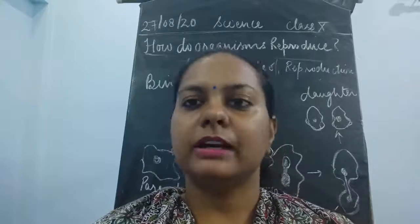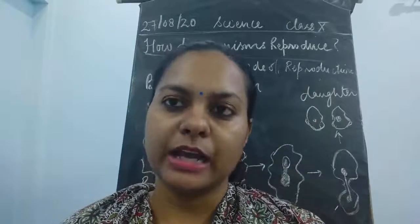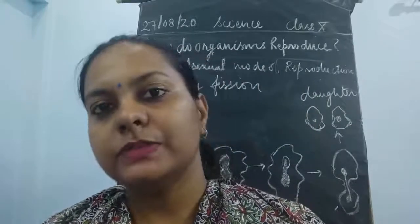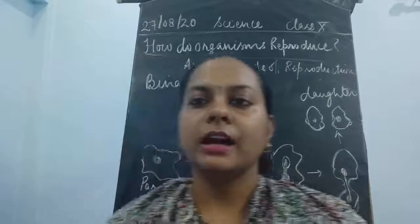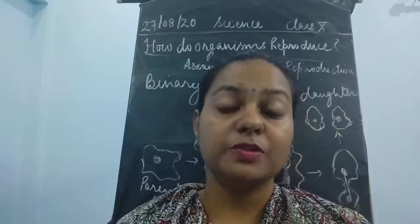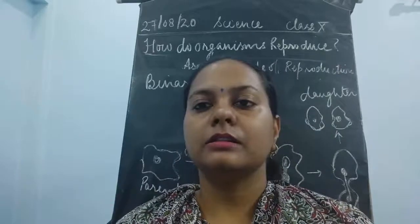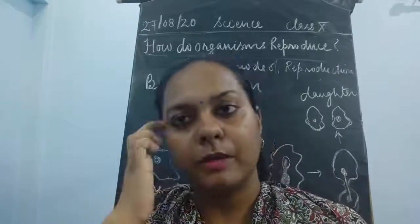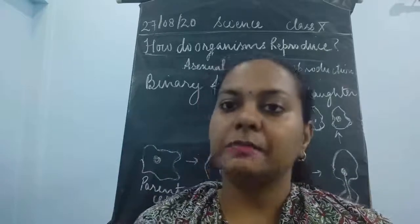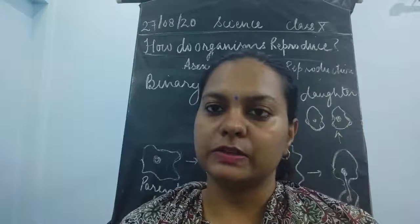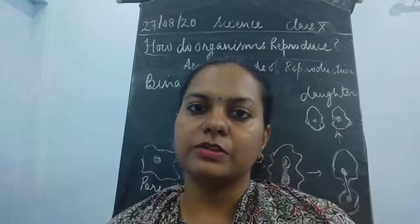Hello students, I'm here with another video from the chapter of Class 10th NCERT book, 'How Do Organisms Reproduce.' Before starting today's video, I'd like to recap what we've discussed so far. We discussed the term reproduction, which means that organisms are going to increase their number. This happens because of the presence of DNA inside the nucleus of the cell, which gets copied and passes to the next generation.